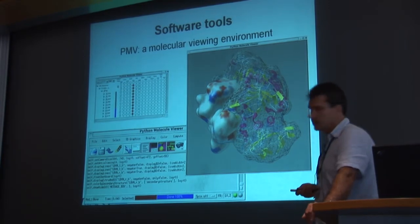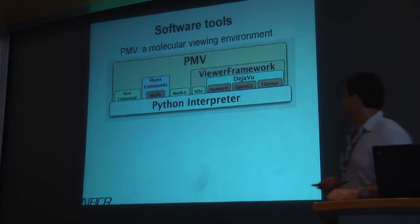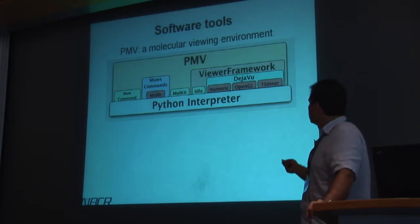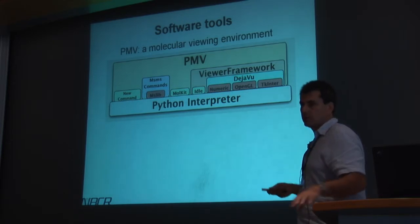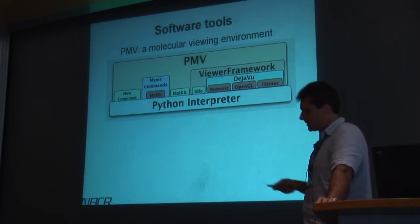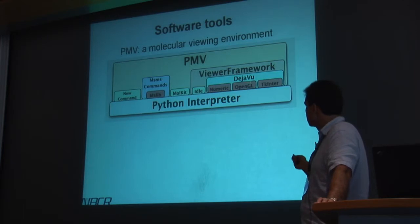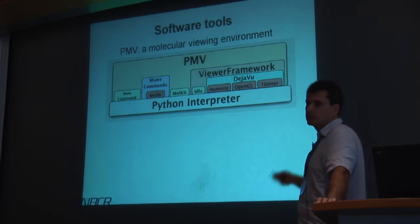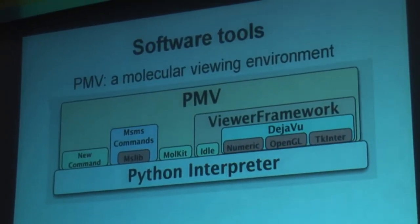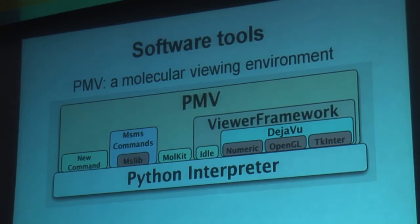From an architectural point of view, PMV needs a Python interpreter to run and uses the viewer framework, a boilerplate visualization application. The viewer framework uses the DejaVu component, our OpenGL-based 3D viewer. Nested boxes denote dependencies — you need DejaVu for the viewer framework to work properly. This gives you a boilerplate 3D visualization application with support for menus, graphical user interfaces, parameter setting, and automatic logging of commands. We then add molecular functionality by writing commands for PMV within this framework.